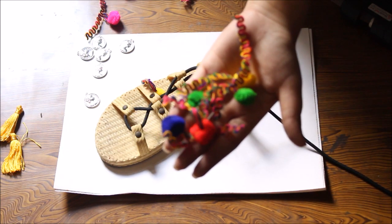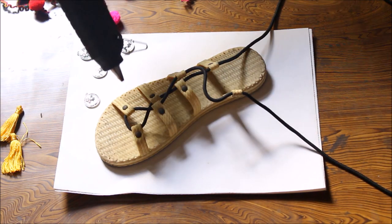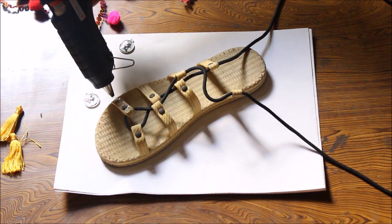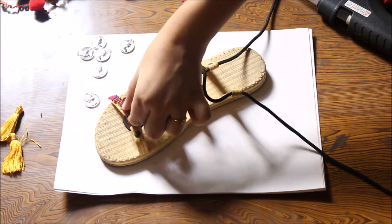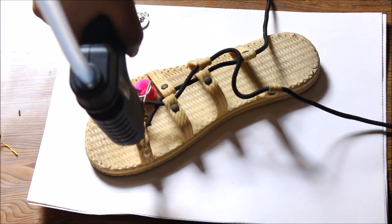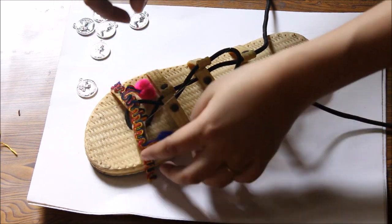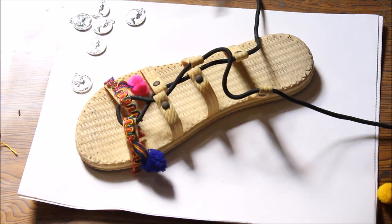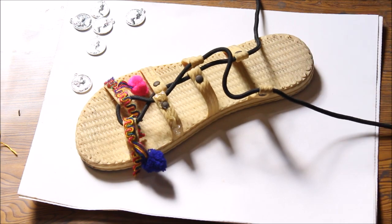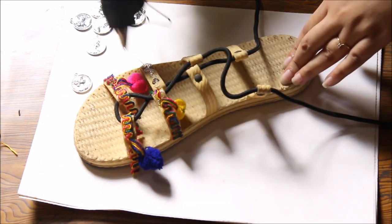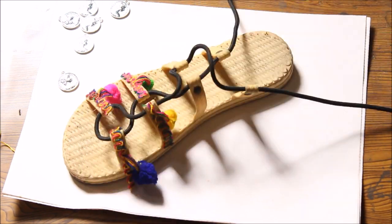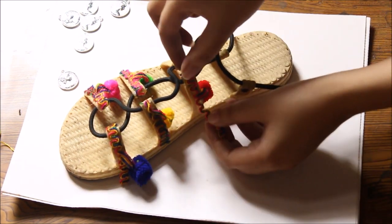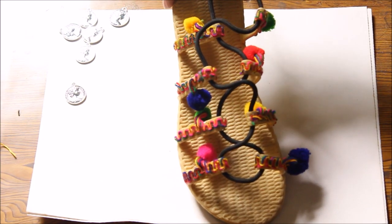Next I will attach the small pieces of pom-pom lace on my shoes using some hot glue. If you do not have a hot glue gun you can use any other strong glue. In the same way I will attach all the small pieces of pom-pom lace.